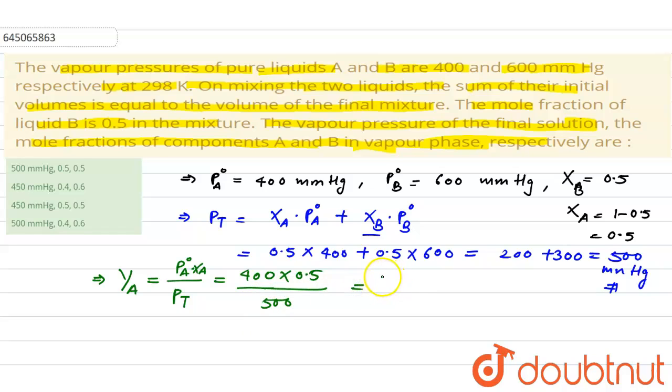So it would be equal to 200 divided by 500, that is 0.4, that is mole fraction of A in vapor phase.